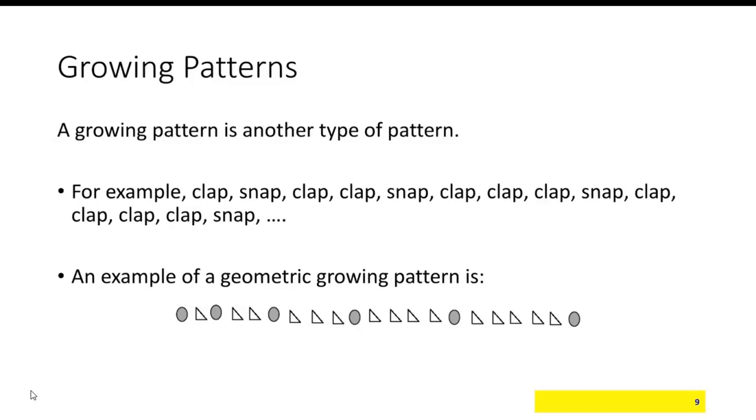Another type of pattern is a growing pattern. If you start with a clap, snap, then clap, clap, snap, then clap, clap, clap, snap, then clap, clap, clap, clap, snap, then clap, clap, clap, clap, clap, snap, you can see you're doing more claps each time. That's a growing pattern.